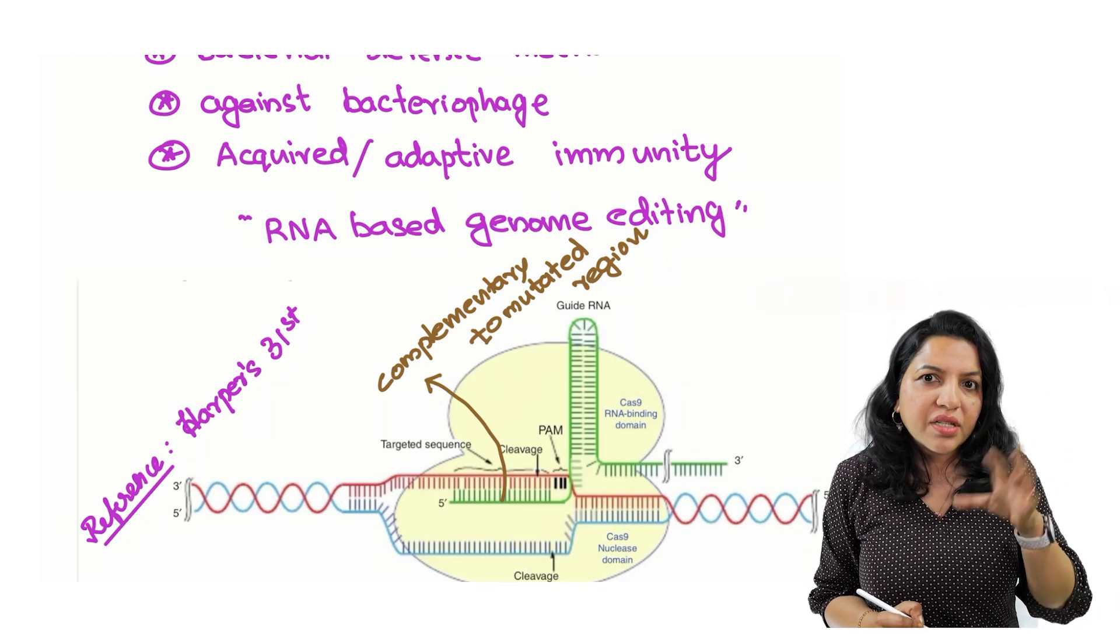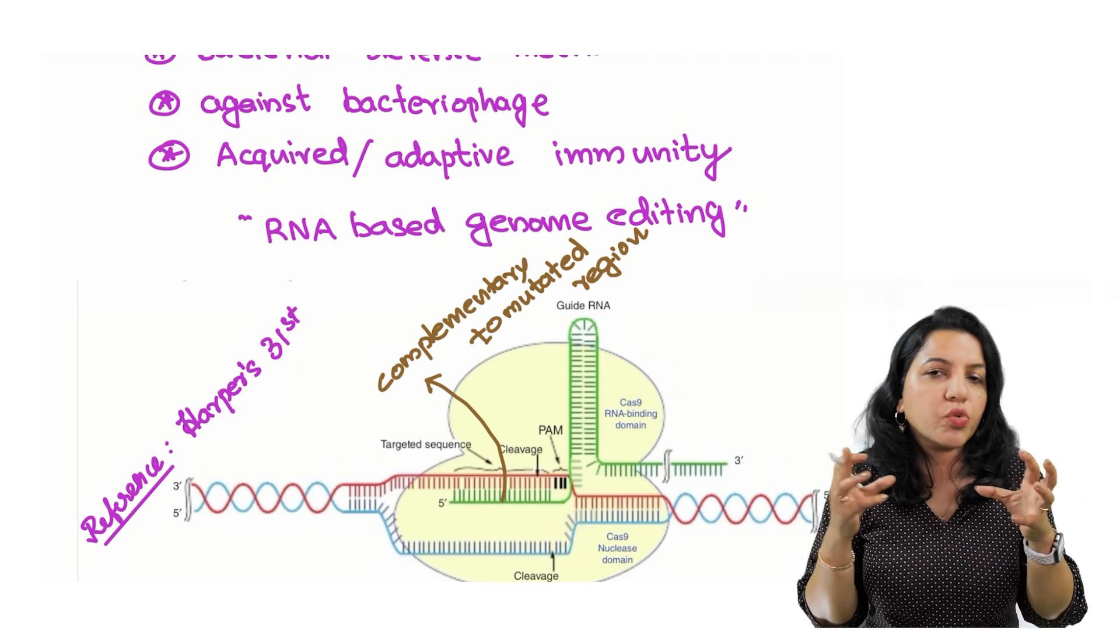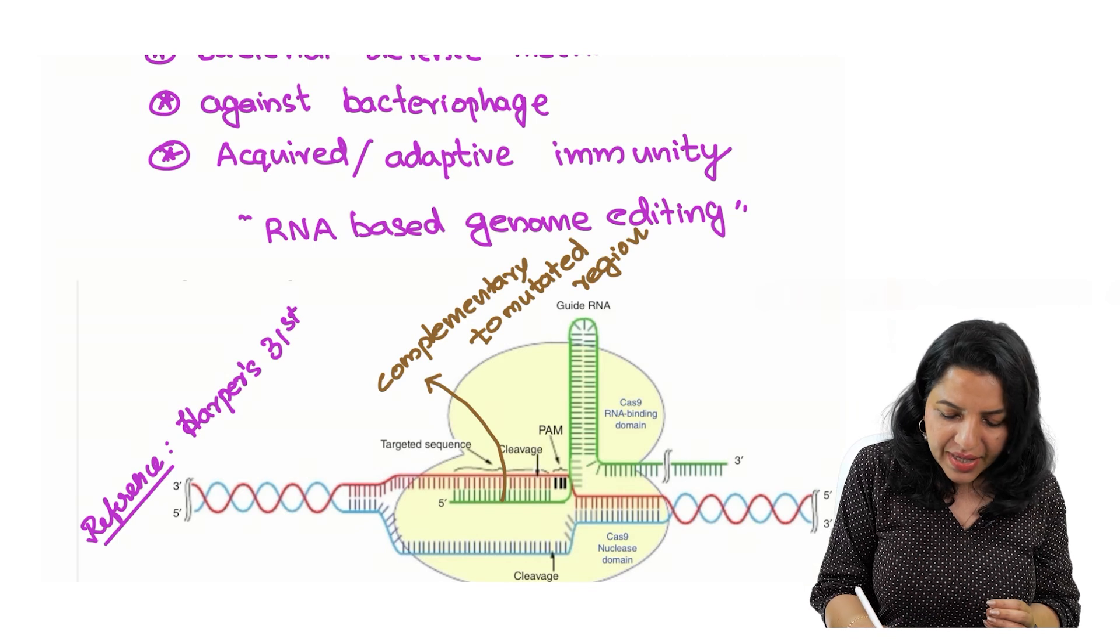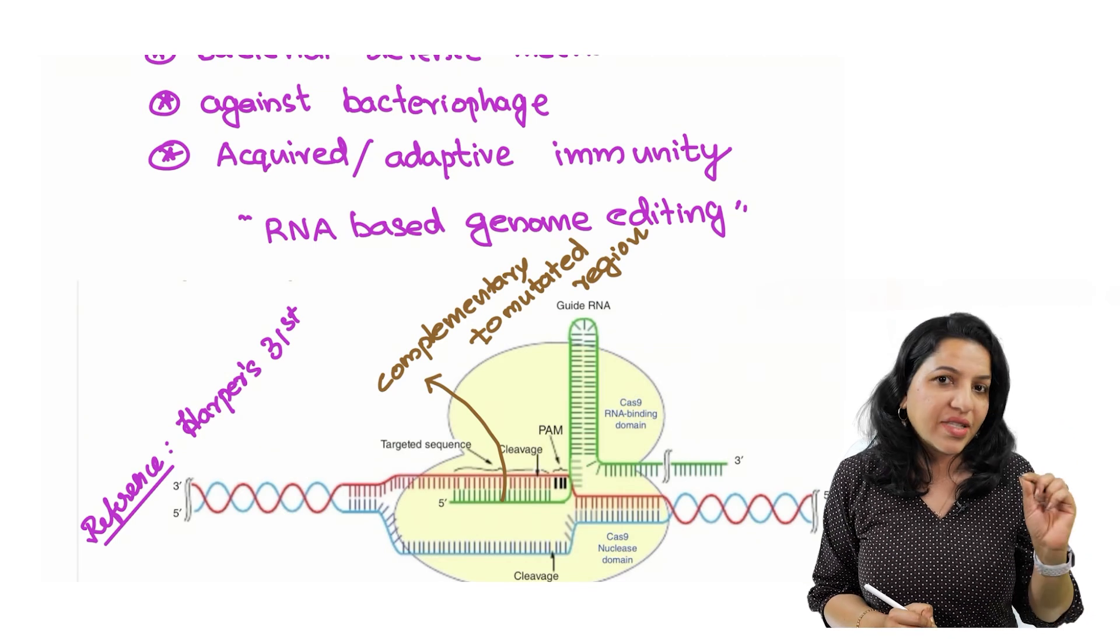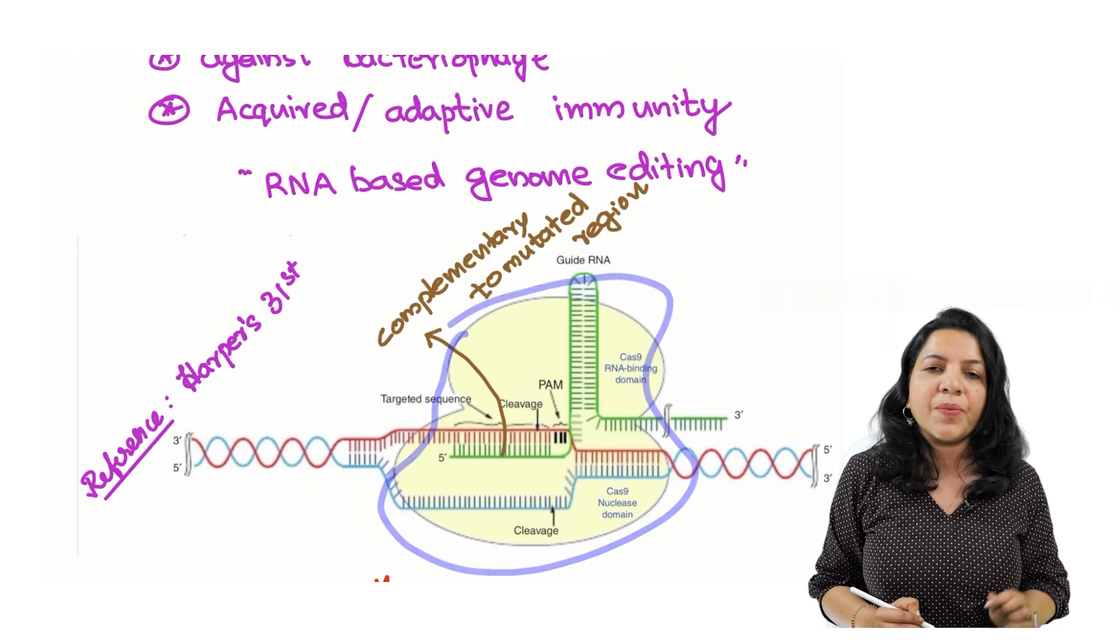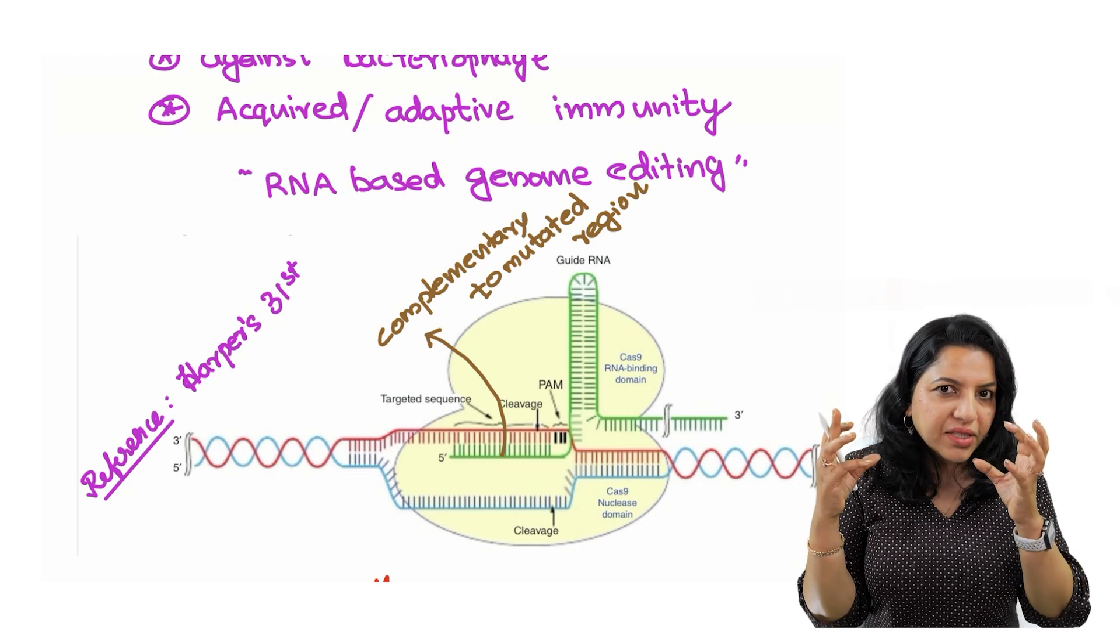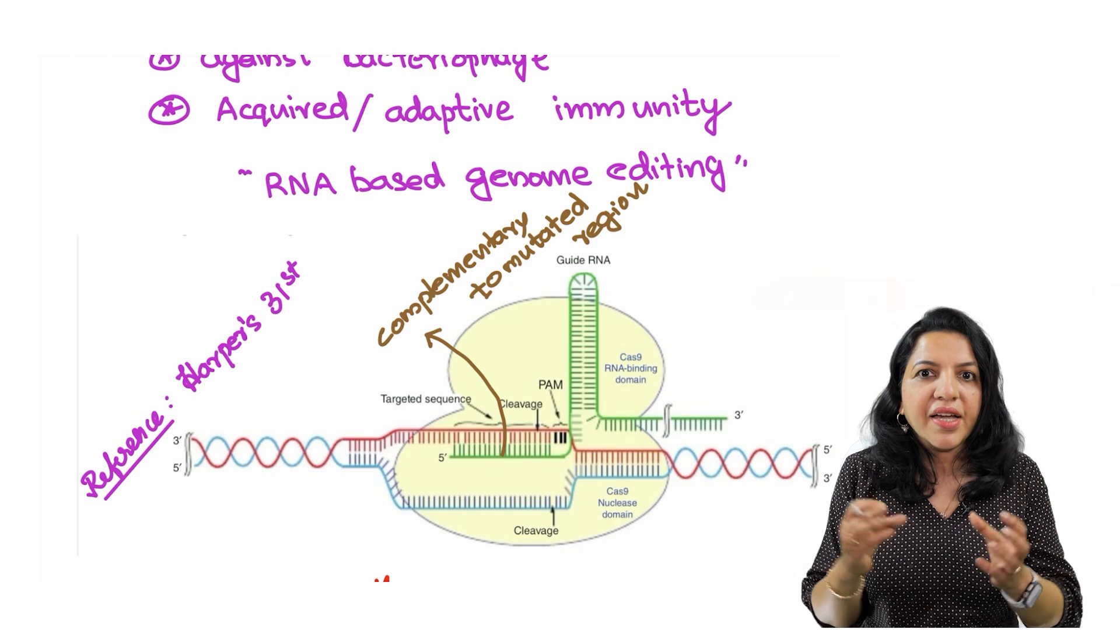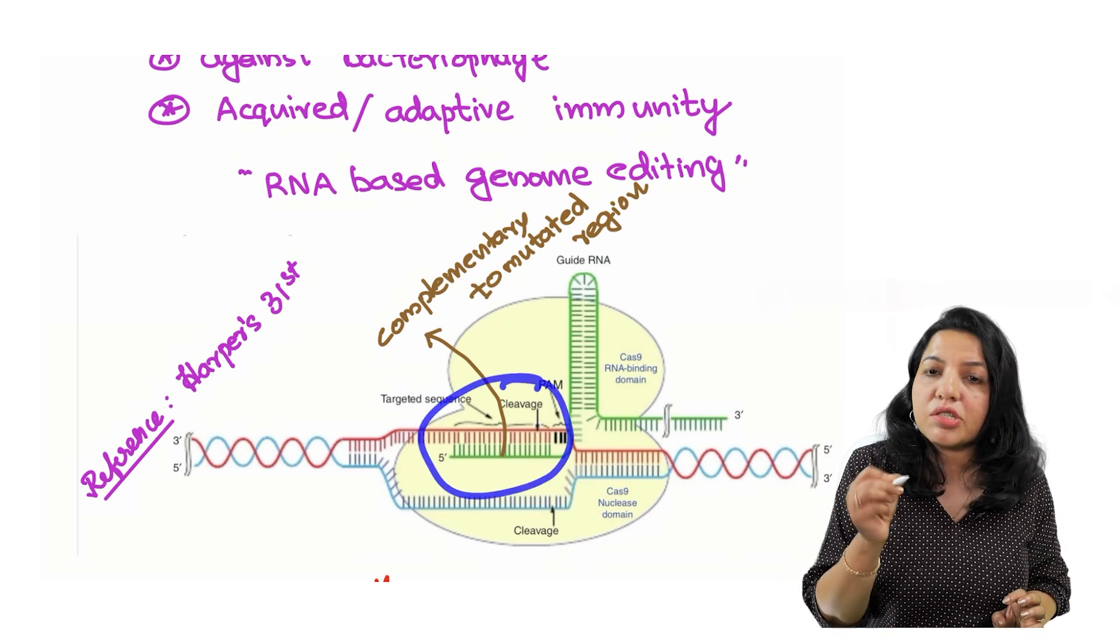Apart from that, there is something else here. This guide RNA is targeting one enzyme towards the mutated region. And what is that enzyme? It is Cas9 endonuclease. So you can see here the Cas9 endonuclease. This guide RNA with CRISPR-Cas9 is targeting this Cas9 to the mutated region because it is complementary.